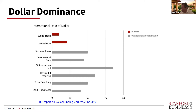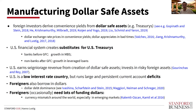This role of the dollar manifests itself in various ways. One key aspect is that it creates a unique opportunity for the U.S. to manufacture dollar safe assets, because foreign investors seem to derive convenience yields from their holdings of dollar safe assets, in particular Treasuries. There's a lot of recent work starting from this theme, drawing on earlier work by Arvind Krishnamurthy and Annette Vissing-Jørgensen, Francis Longstaff, and Caballero and others.